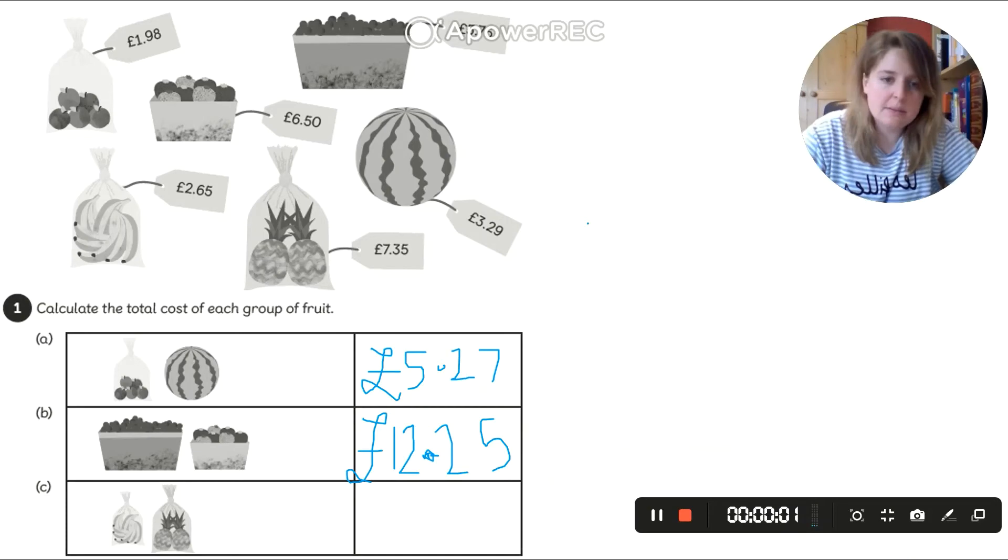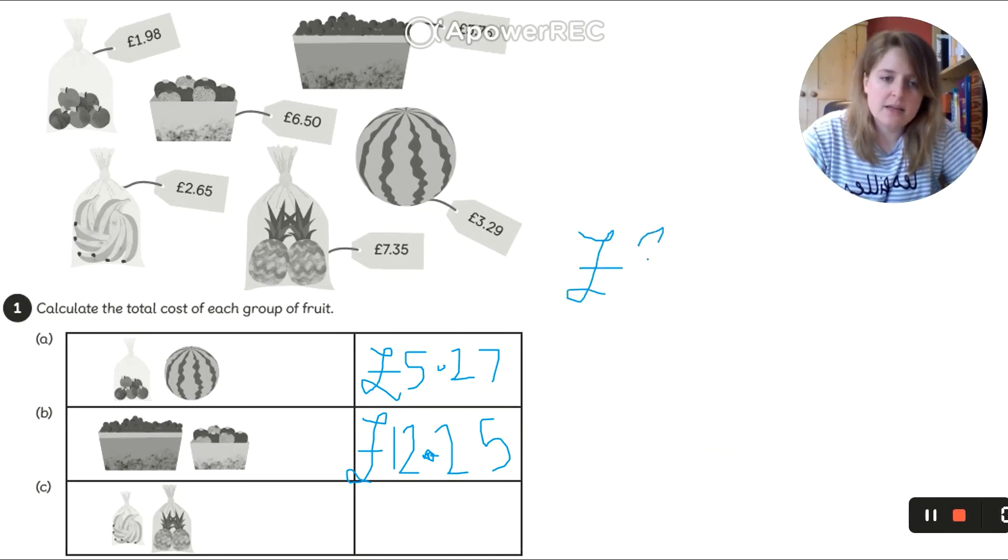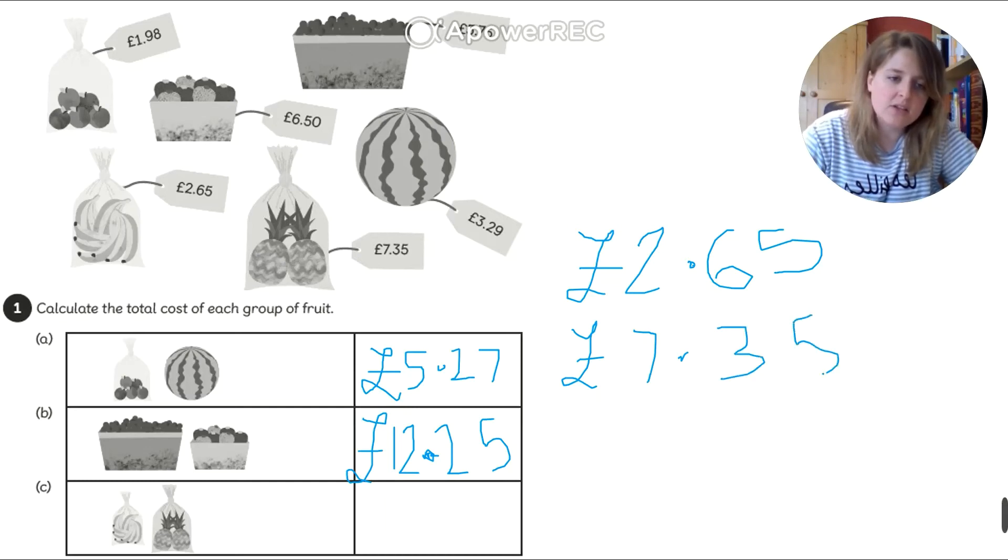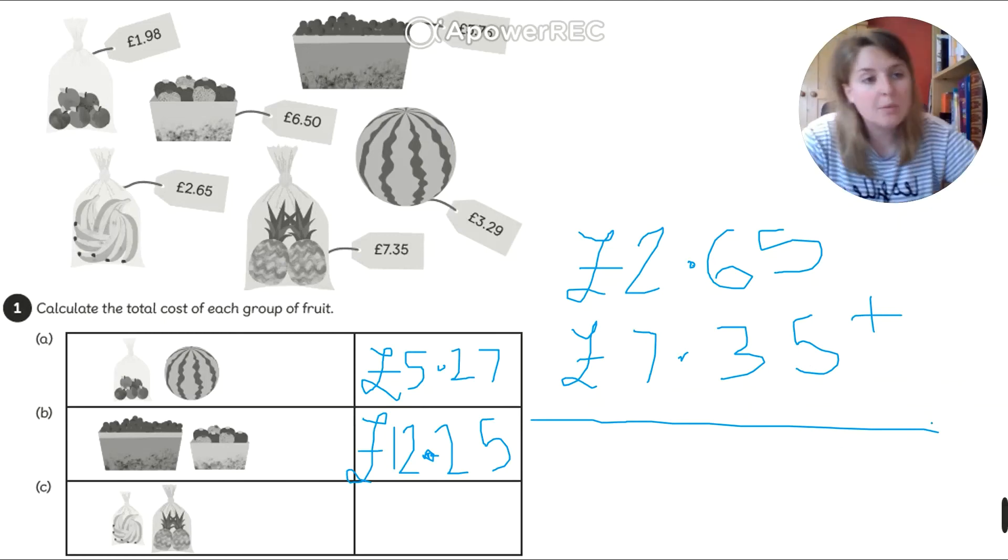OK. And the last one. I've got some bananas which cost me £2.65. And I've got some pineapples which cost me £7.35. And look how always my numbers may look a bit funny. But they are always lined up. 5 above the 5. 6 above the 3. Dot above the dot. 2 above the 7. Pound sign above the pound sign. So that I add it up. My numbers are all over the place. It won't add up properly.